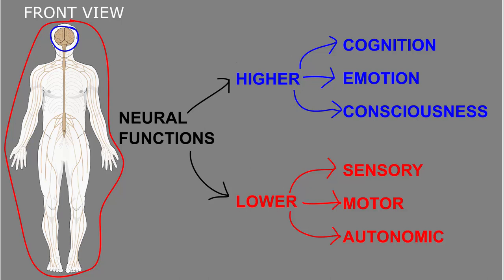You could use all sorts of different terms to try to divide up the functions of the nervous system. But what I think of as the lower, or more basic, or more physical neural functions, are carried out by many parts of both the central and the peripheral nervous system.